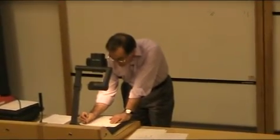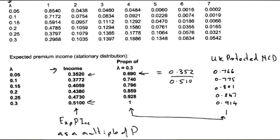UK protected NCD. If we do the same figures here, instead of 0.69 I get 0.766 and then it's 0.775, 0.801, 0.847, 0.914 and 1. These correspond to these figures here. So it's the proportion of lambda is 0.3, that's why I get a 1 at the bottom.